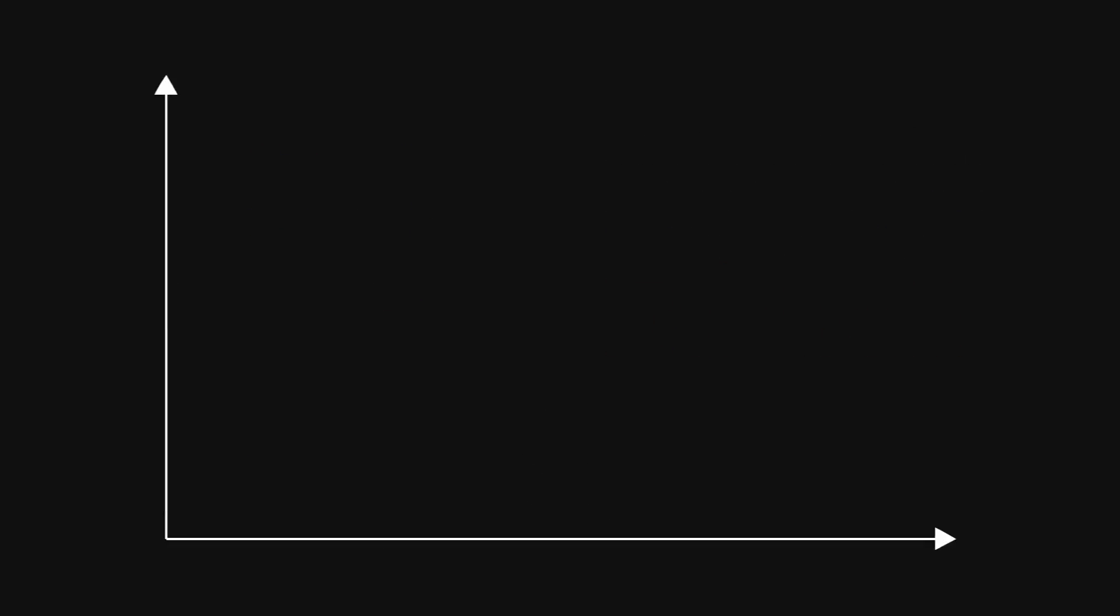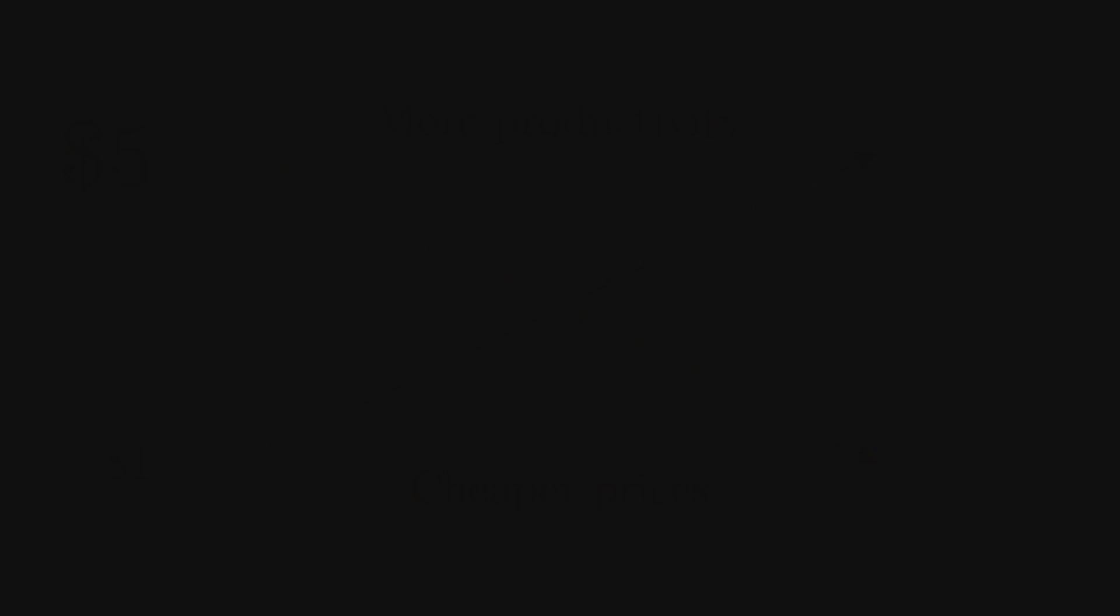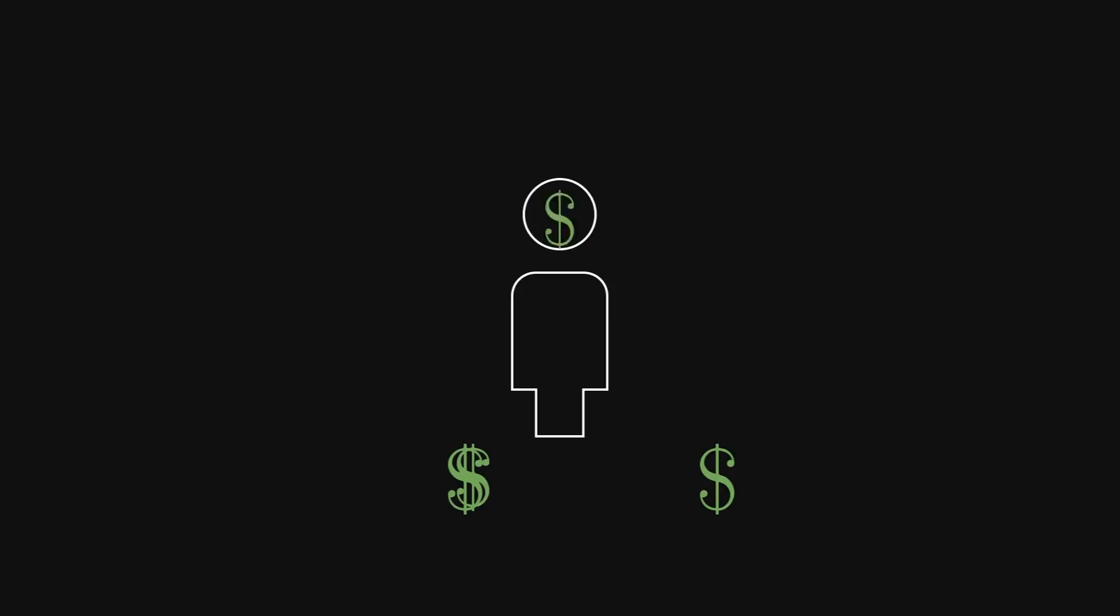Well, Kate, automation leads to higher productivity and lower production costs. This means the price of your cornflakes can drop from $5 to $1 per box while still maintaining the same profit margin. And now you're undercutting your competitors, making even more profit.